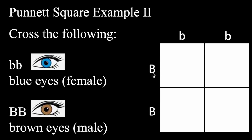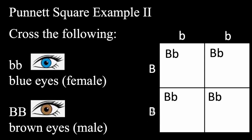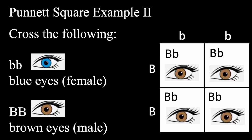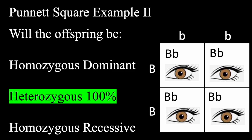I'm going to take this dominant allele — this capital letter — and bring that over to the right, and take the female's recessive allele and bring that down. This is going to result in a heterozygous cross. In the upper right-hand quadrant, I bring the male's allele over to the right and take the female's allele and bring that down — that results in heterozygous as well. The same applies for the bottom two boxes, resulting in a phenotype of being 100% brown eyes, with 100% being heterozygous.